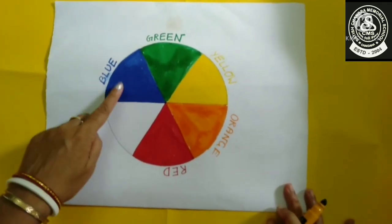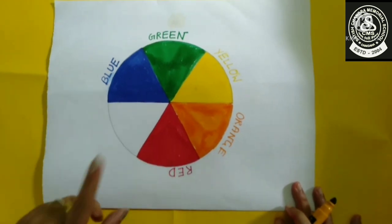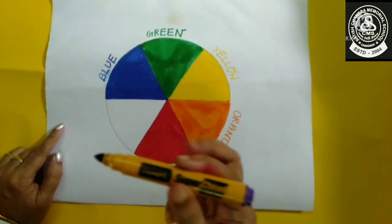So if we mix blue and red, what will you get? You will get violet.